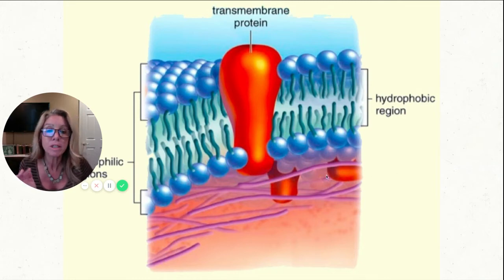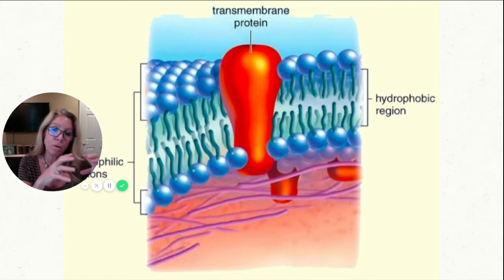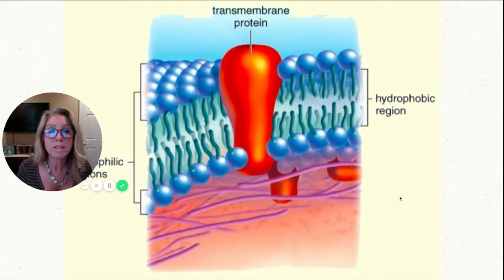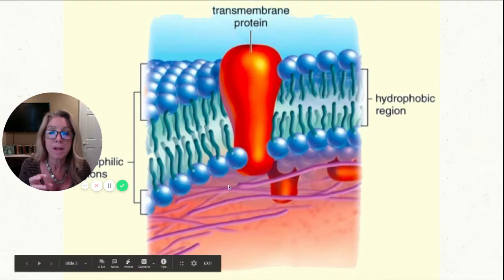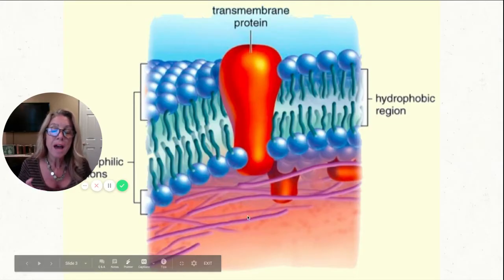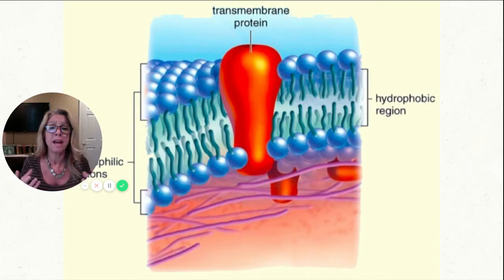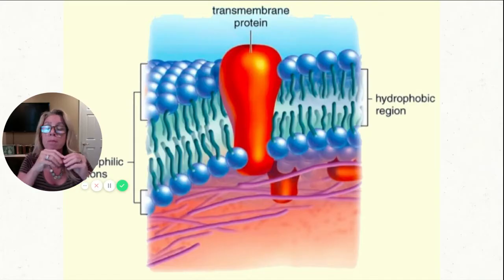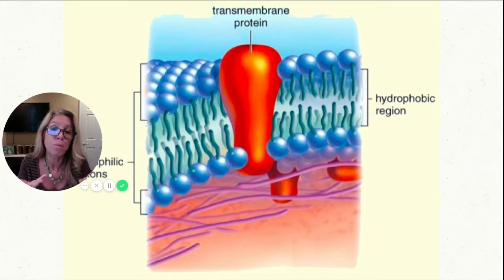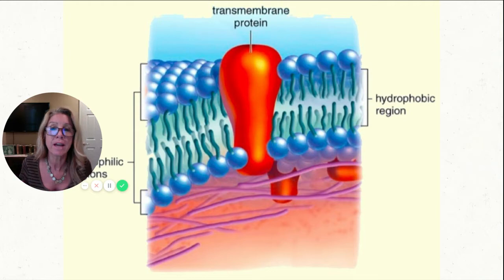Some proteins are only found on one edge — those are peripheral proteins. Something else we can see in this cell membrane are these purple strings, which are part of the cytoskeleton. An example would be actin — basically two chains of amino acids twisted together, providing the underlying support of this cell membrane. This particular cell membrane is probably in an animal cell because I do not see a cell wall on the outside.